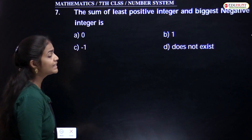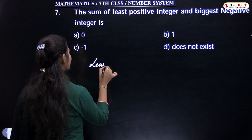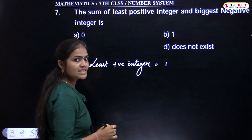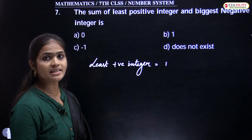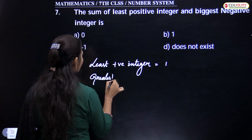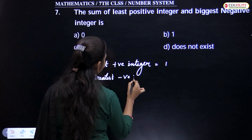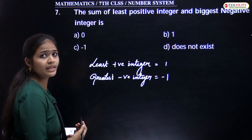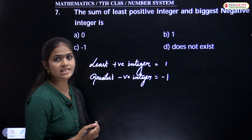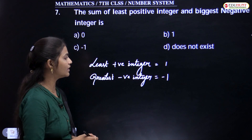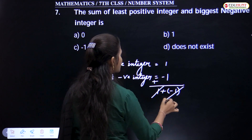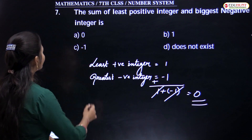The sum of the least positive integer and the biggest negative integer. The least positive integer is plus 1 — that is the smallest natural number. The greatest negative integer is minus 1. The smallest negative integer is not defined, and the greatest positive integer is not defined. So the sum is 1 plus minus 1, which equals 0. The answer is 0.